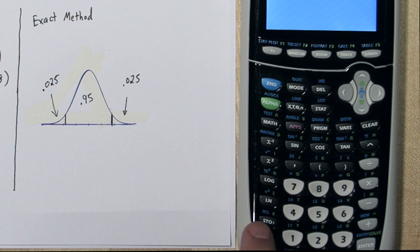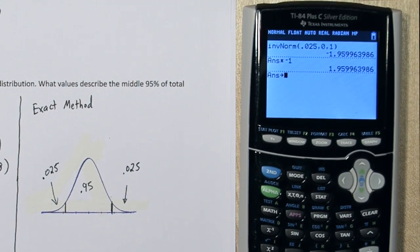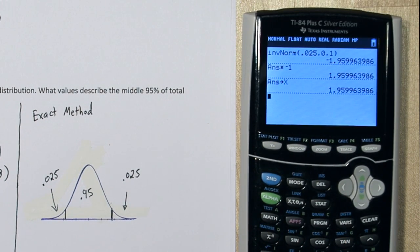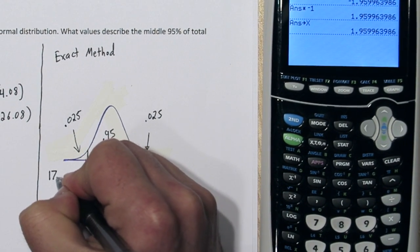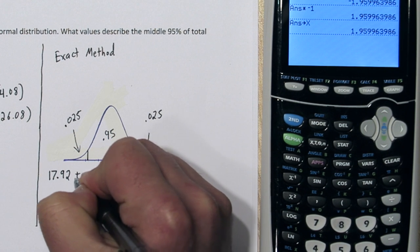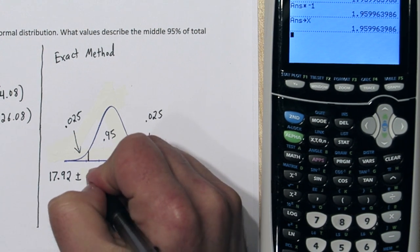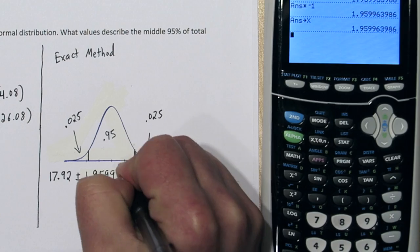So on my calculator, if I press the STO arrow button, I can store this value as x. That way I don't have to type it a bunch of times. So I'm going to take my mean and add and subtract 1.959963986 standard deviations from it.